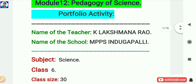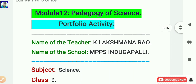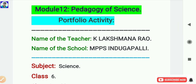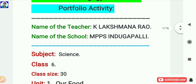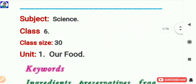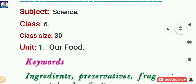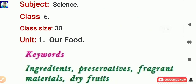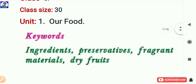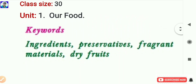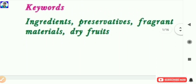This is module 12 Pedagogy of Science Portfolio Activity. You have to write the basic details: name of the teacher, name of the school, subject, science class 6, class size 30, unit 1 - Our Food. Keywords from the selected topic are: Ingredients, Preservatives, Fragrant Materials, Dry Fruits.